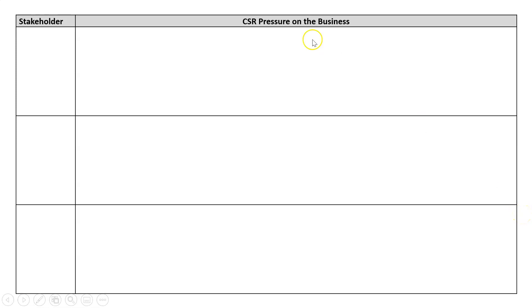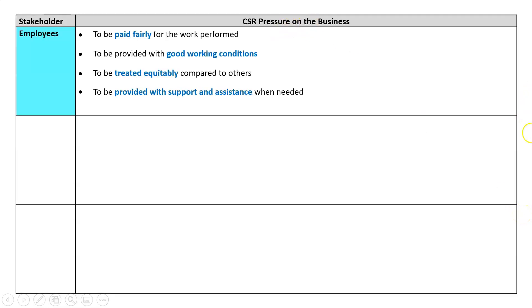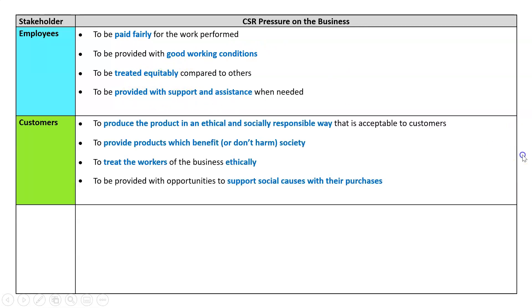Then we have the stakeholders of the business and how they put CSR pressure on it. For employees, that could be to be paid fairly, good conditions, treated equitably, and to be provided with support and assistance when needed. Customers want to buy products that benefit or don't harm society — they don't want things that are toxic or bad for people.